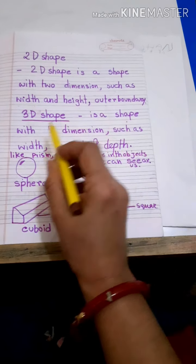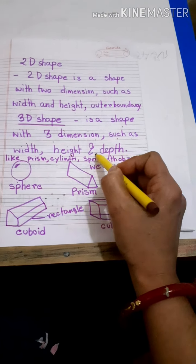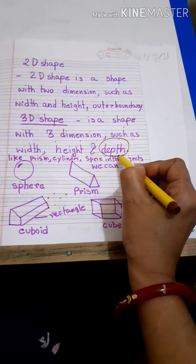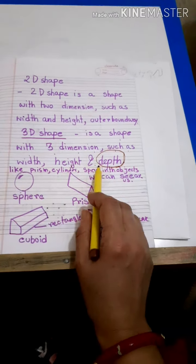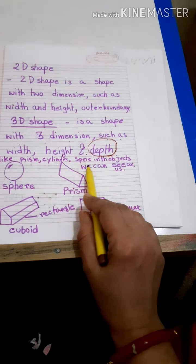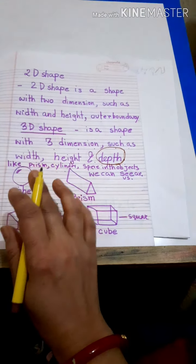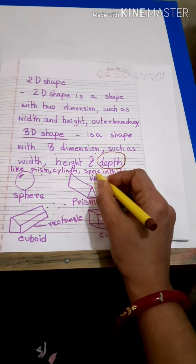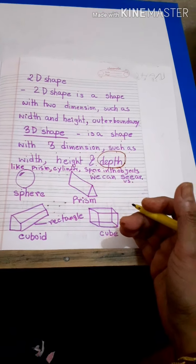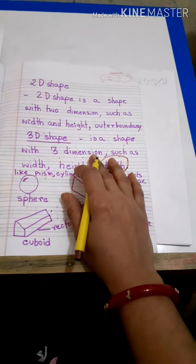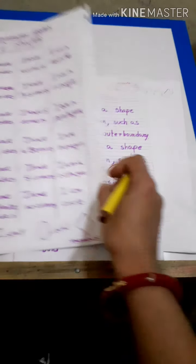Now what is a 3D shape? A 3D shape is a shape with three dimensions such as width, height, as well as a third one — depth. Depth is the most important thing to describe 3D three-dimensional shapes, like prisms, cylinders, spheres. The difference between 2D and 3D shapes is that most 3D shapes we can see in objects surrounded by us.